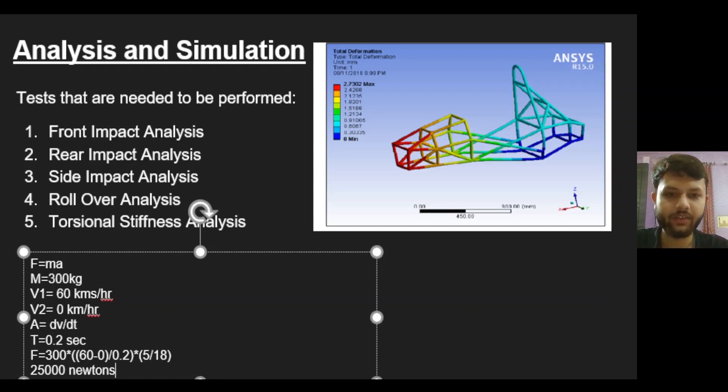Similarly, we have to calculate the forces, the loading point, and the constraint point for the rear impact analysis, side impact analysis, and the rollover analysis. Torsional stiffness analysis is a bit different and it is required when there is a biased lateral load on the vehicle, say during a turn. A torsionally stiff chassis would perform better.